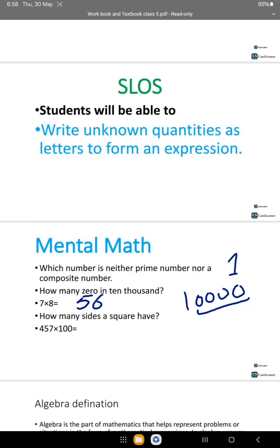How many sides does a square have? There are 4 sides.